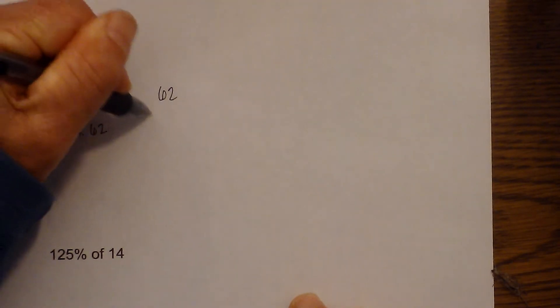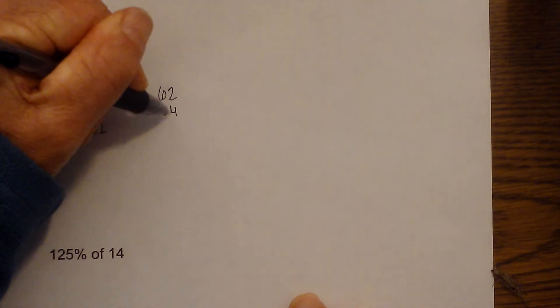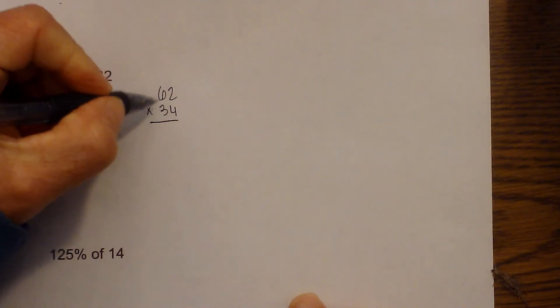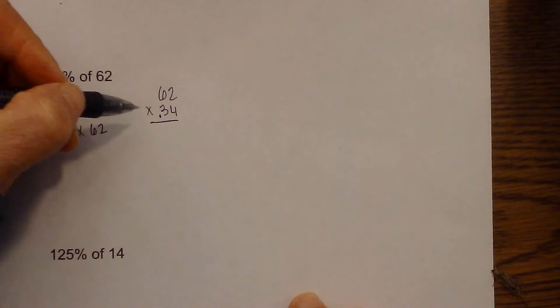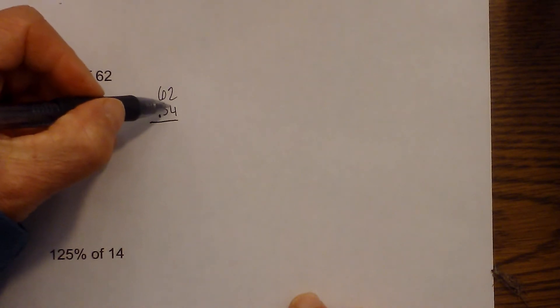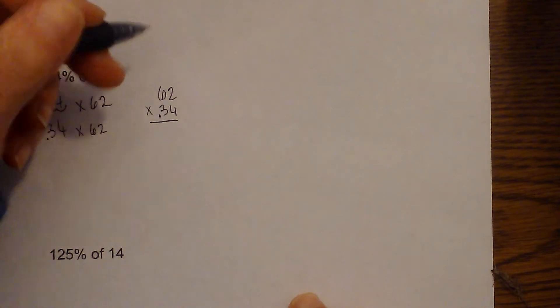And I'm going to solve by rewriting. So now we have, and whenever I multiply with a decimal I just multiply and then move the decimal once I get an answer. Two places, the same number that you have, numbers to the right of the decimal point.